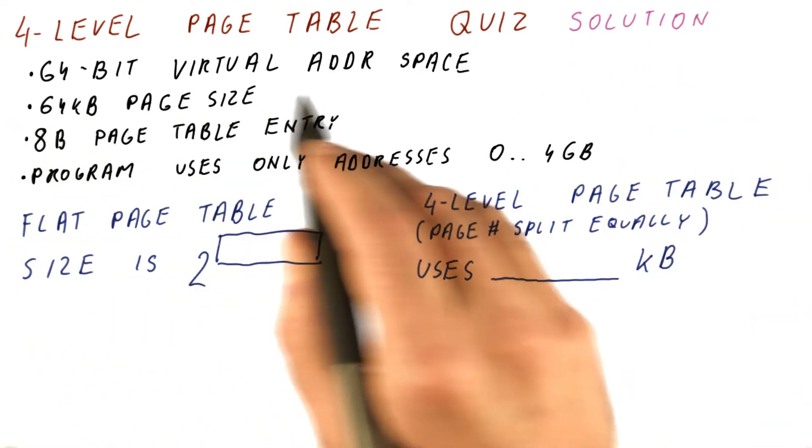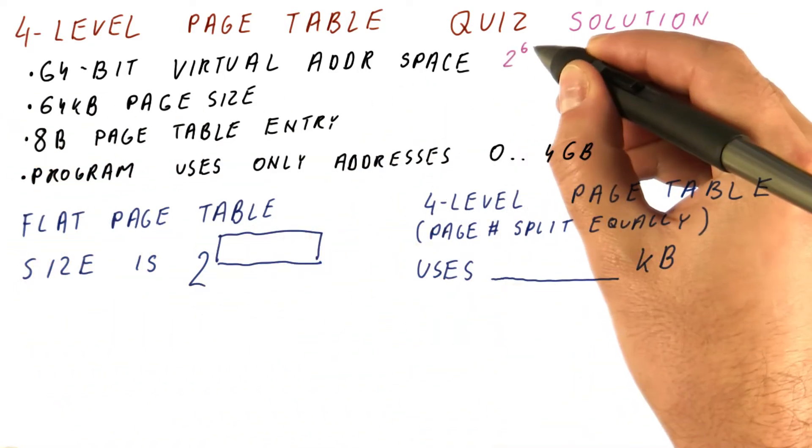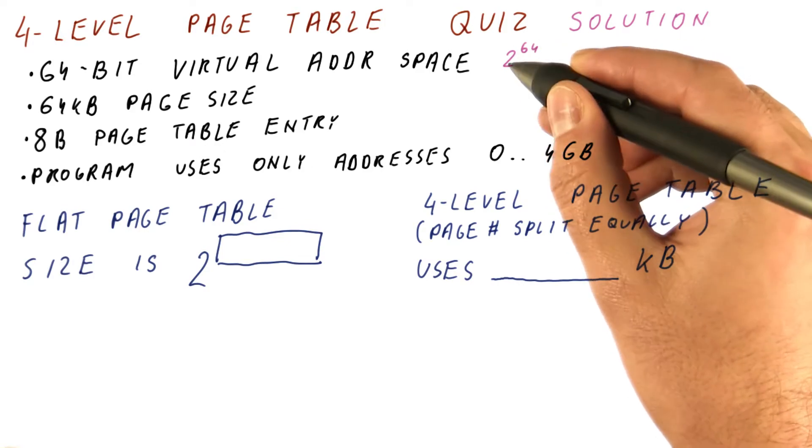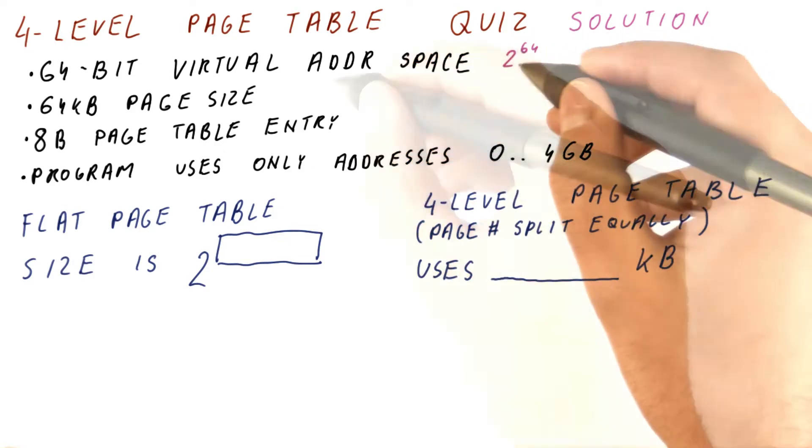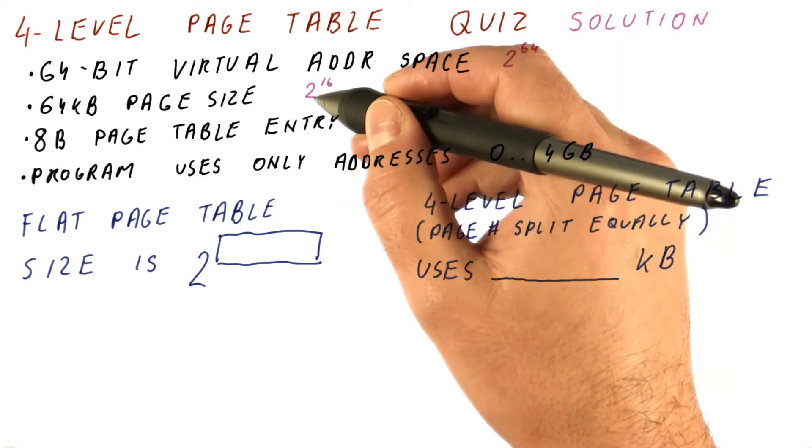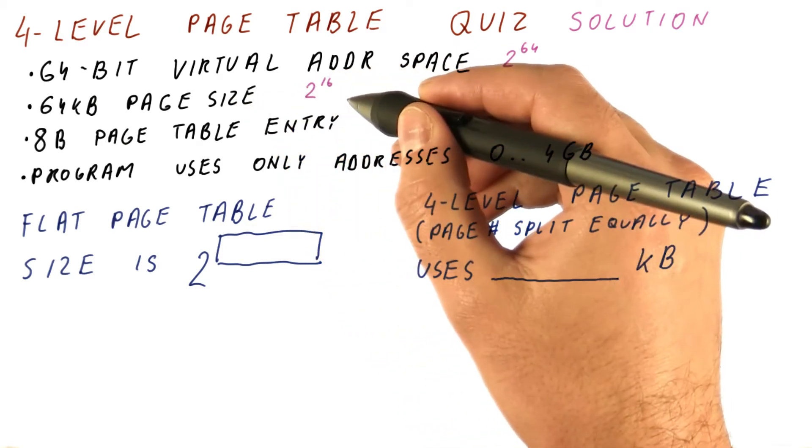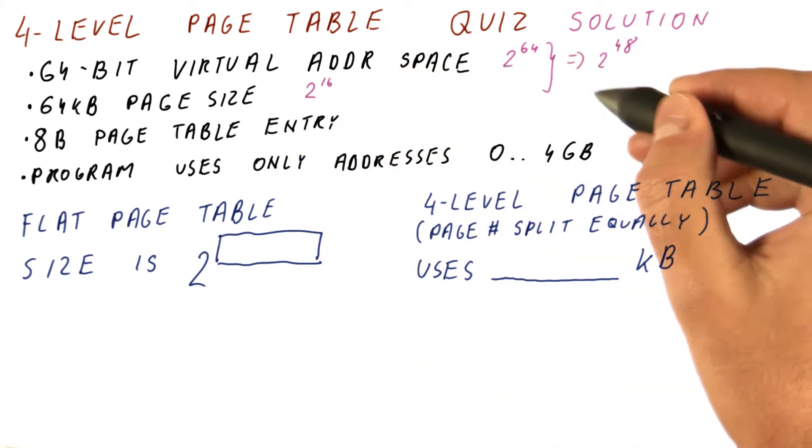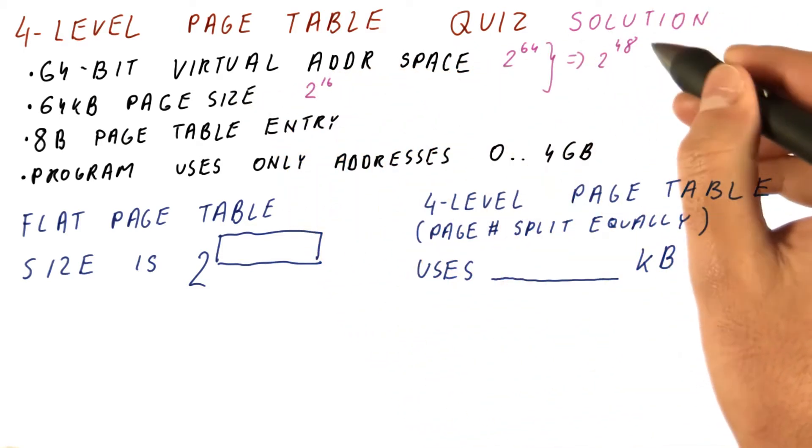Let's look at the solution to our four-level page table quiz. We have 2 to the 64th bytes of address space. We have 2 to the 16th bytes in each page. We get that there are 2 to the 48th pages in our address space.